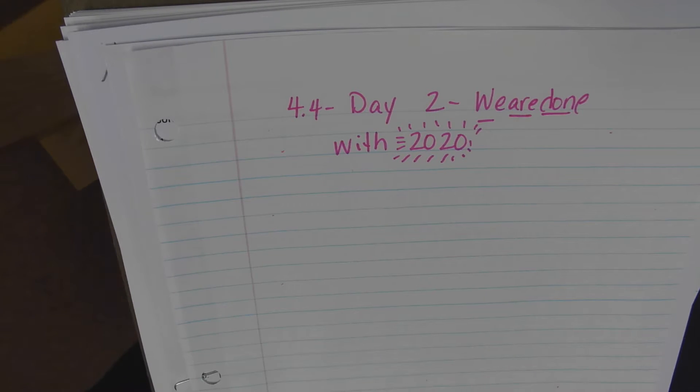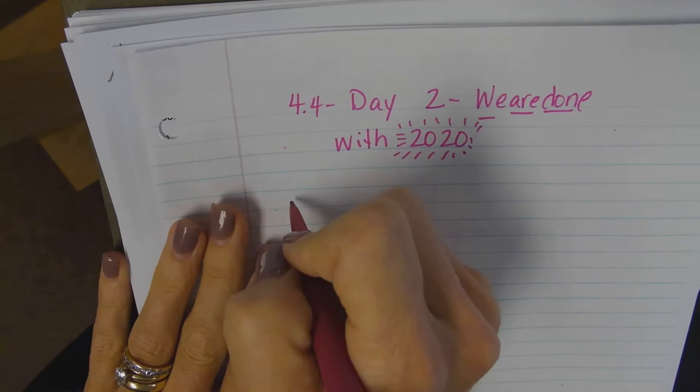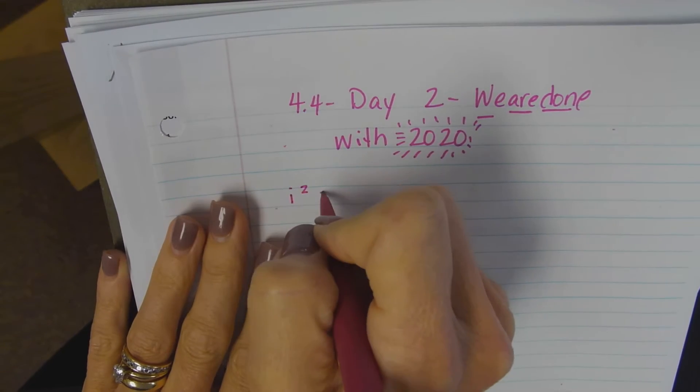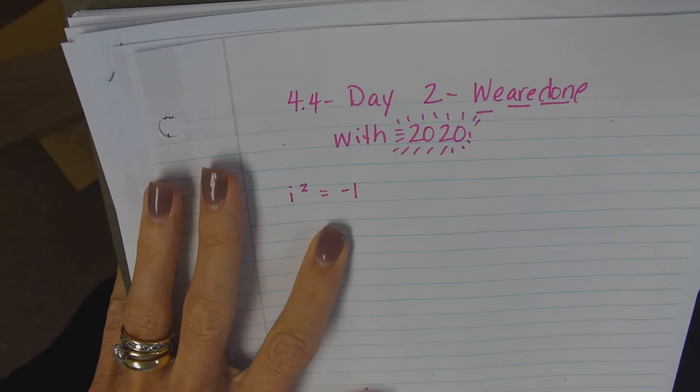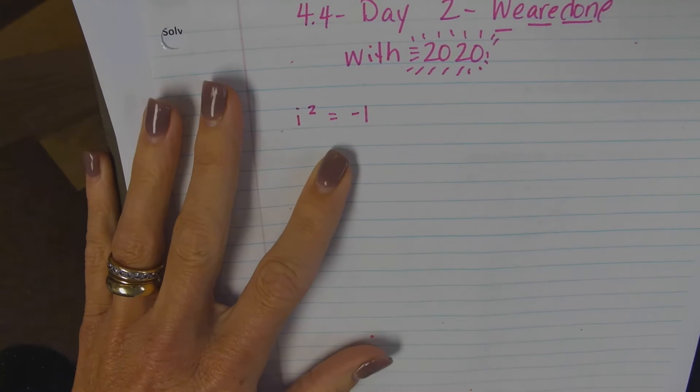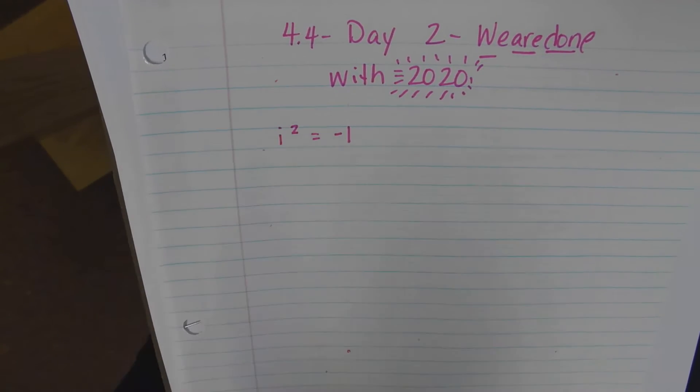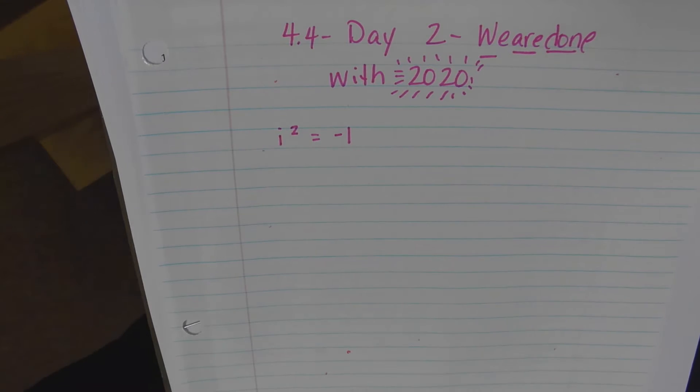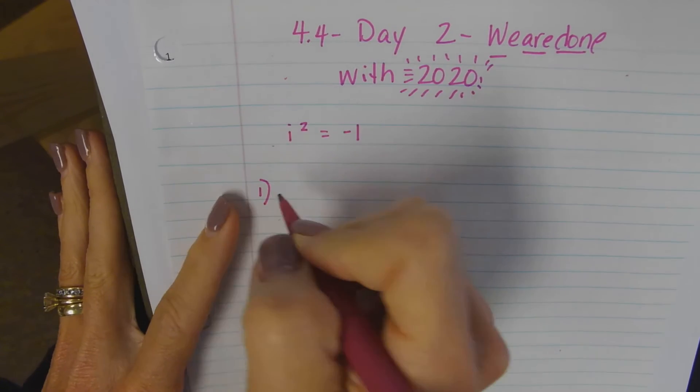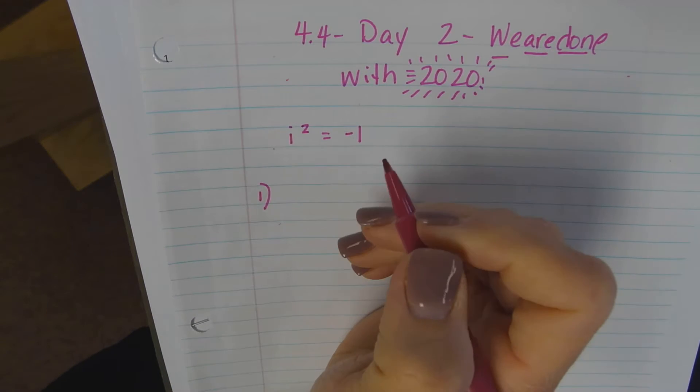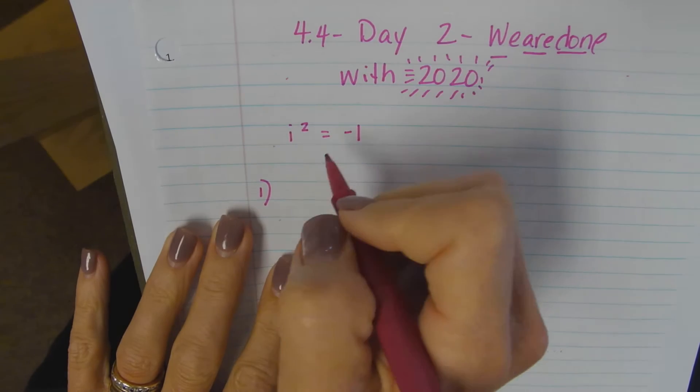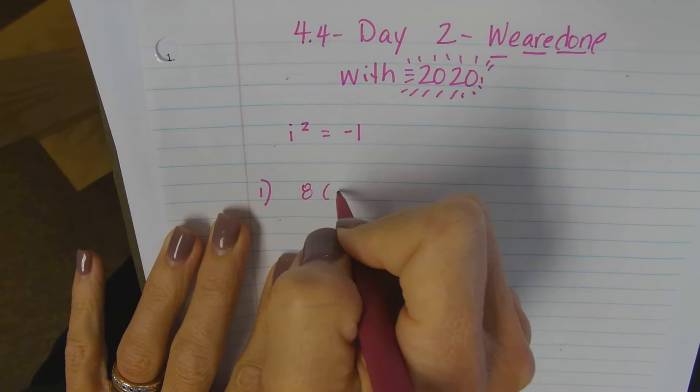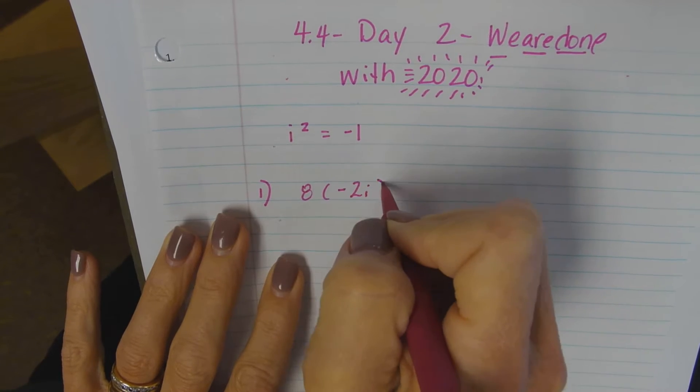Just a quick reminder: what is i squared equal to? Negative one. It does have a value, and that actually helps us simplify. Let's do this example. I'll do 8 times negative 2i. I'm going to start easy.